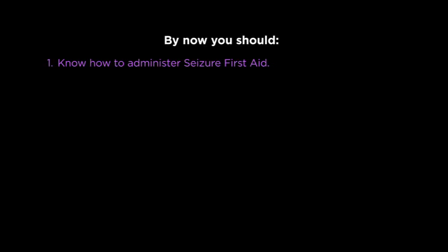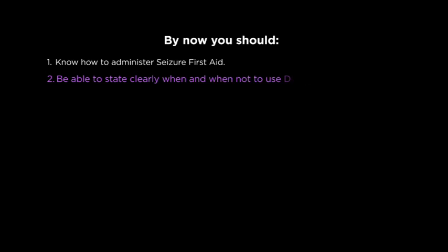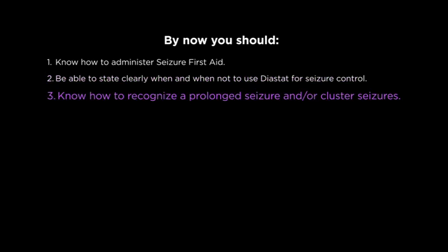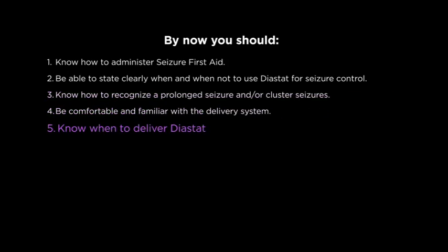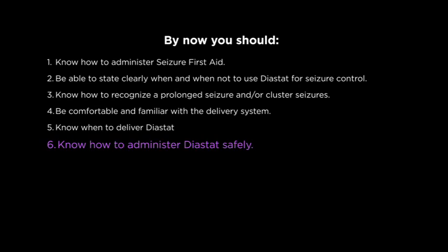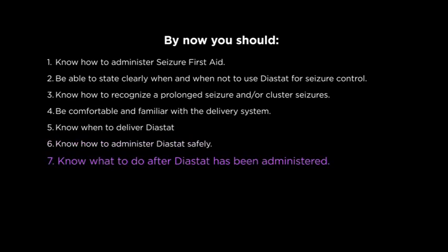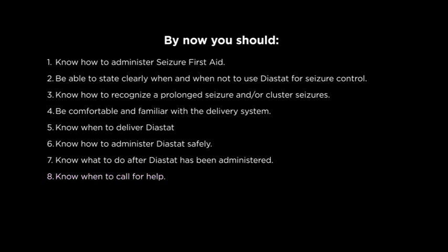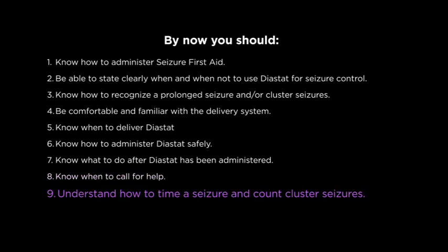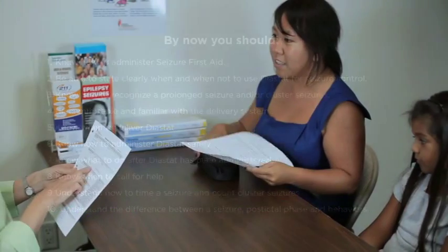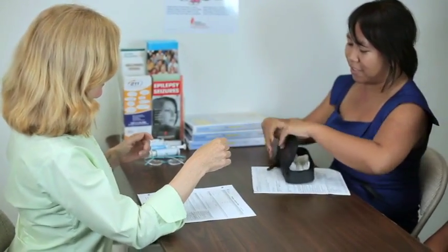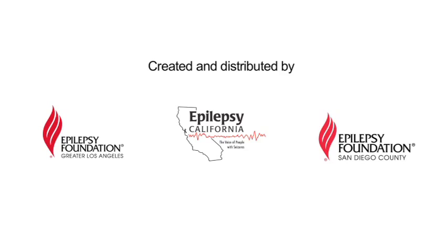By now, you should: know how to administer seizure first aid; be able to state clearly when and when not to use diastat for seizure control; know how to recognize a prolonged seizure and/or cluster seizures; be comfortable and familiar with the delivery system; know when to deliver diastat; know how to administer diastat safely; know what to do after diastat has been administered; know when to call for help; understand how to time a seizure and count cluster seizures; and understand the difference between a seizure, a postictal phase, and behaviors. Please ask the school nurse and parents or guardians if you have remaining questions, and they will consult with the doctor as needed. Other handouts and videos may be available online or from the Epilepsy Foundation.